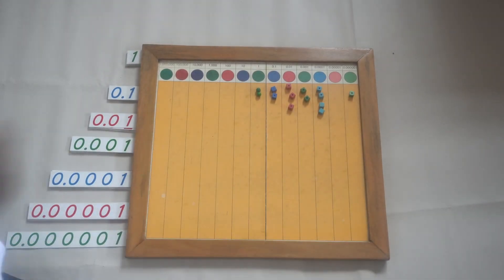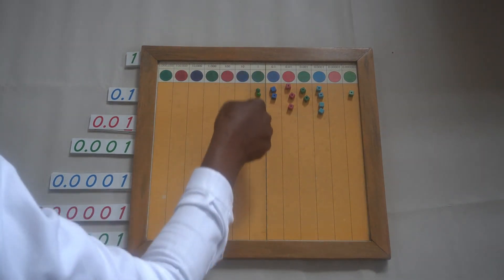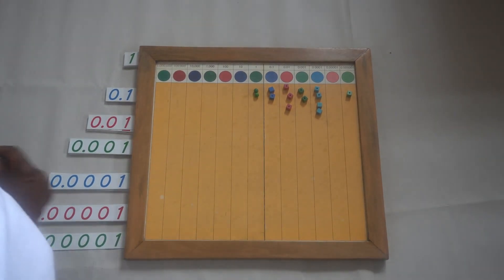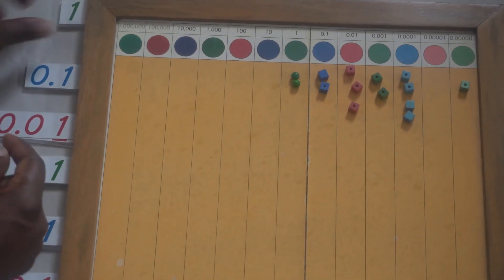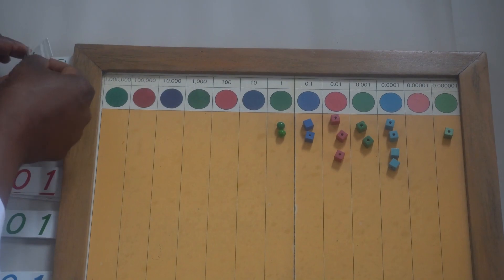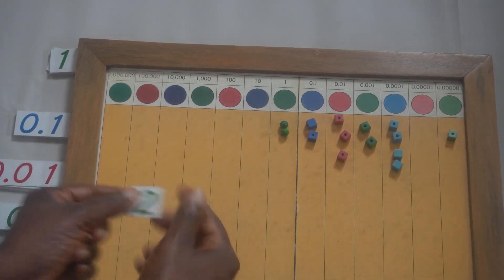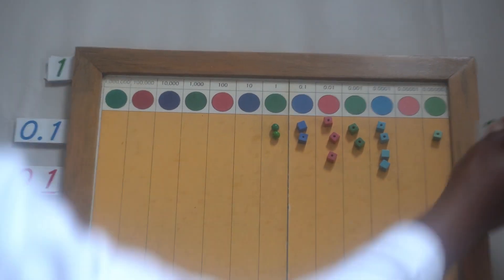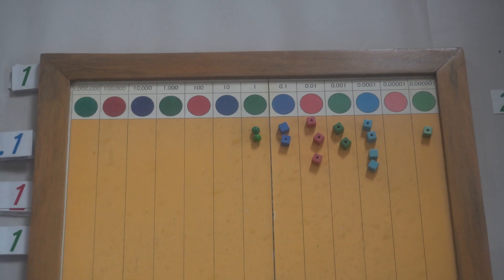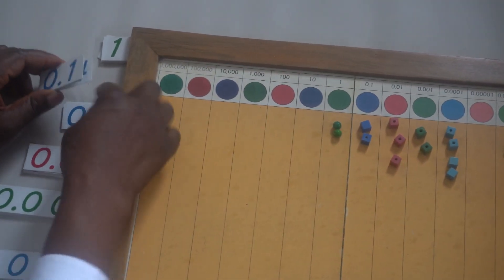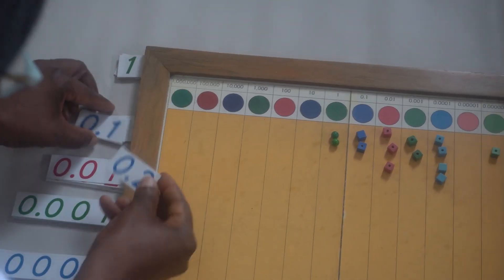Now I have some quantities on the board. Let's look at the categories. In the unit category I have one — two units, so I'll go to my card and take two units. I have my two units here. In the tenths category I have two tenths, so I'll take two tenths. I'll look for two tenths in the tenths category. So I have my two tenths.